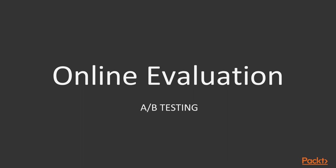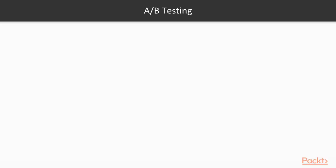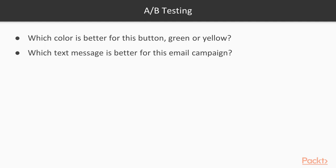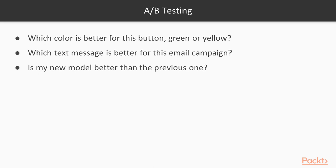Essentially, online evaluation is about A/B testing. Some questions that A/B testing can answer are like this one: which color is better for this button, green or yellow? You want to see if you change the color of the button from yellow to green, if the conversion is going to be increased or not. The same for your text message or email campaign. Or is the new model better than the previous one? That means, is the new model generating more revenue than the previous one?